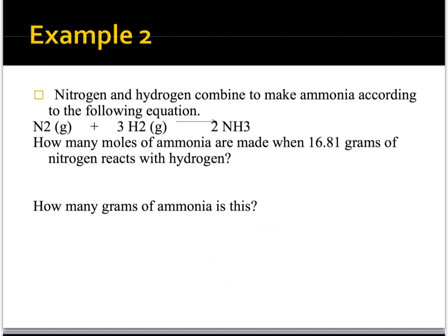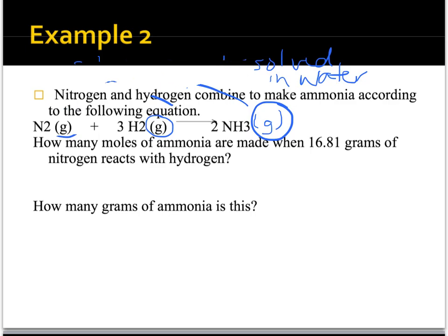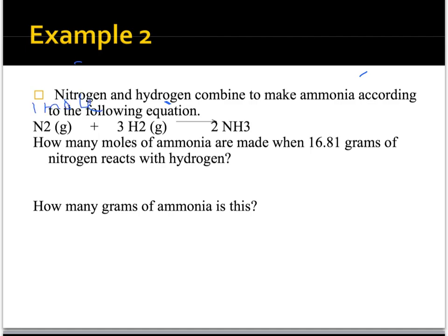These are going to get progressively more difficult. One other thing before the next problem: in chemical equations you might see (s), (l), (g), or (aq) — that specifies the state of matter or that something is dissolved in water, basically telling you the format the material is in. Now, here's the balanced equation for the Haber process, which is used to produce ammonia: one mole of nitrogen reacts with three moles of hydrogen to produce two moles of ammonia.